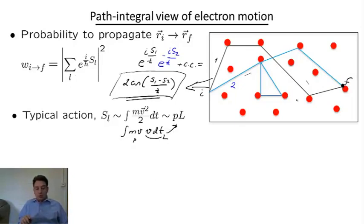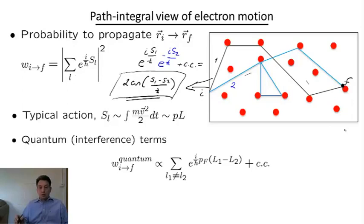Using this estimate, we can also estimate the typical quantum interference terms, which are described by the sum of all pairs of non-equivalent different trajectories, L1 and L2. And now, instead of the action S, we write explicitly the typical momentum, which, by the way, is called Fermi momentum, divided by h-bar, times the difference in length between the two trajectories under consideration. Or, we can write it equivalently as the cosine, sum over all L1 not equal to L2, cosine of typical momentum times delta L divided by h-bar.